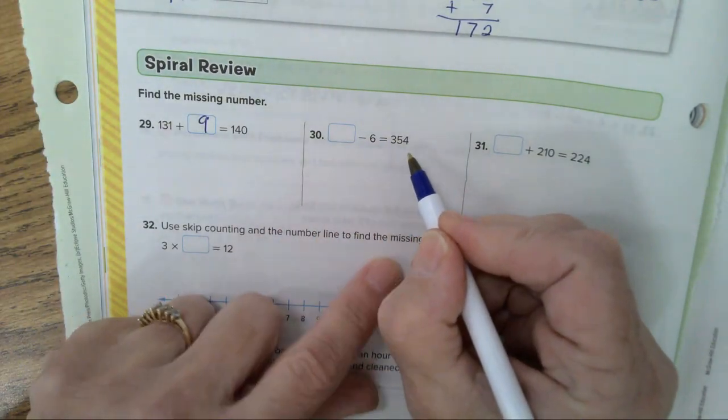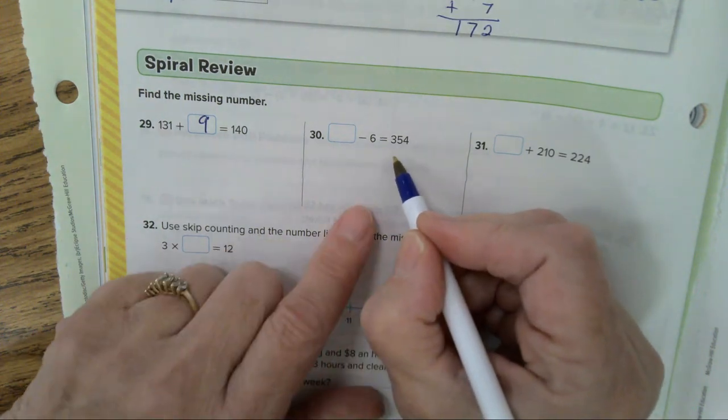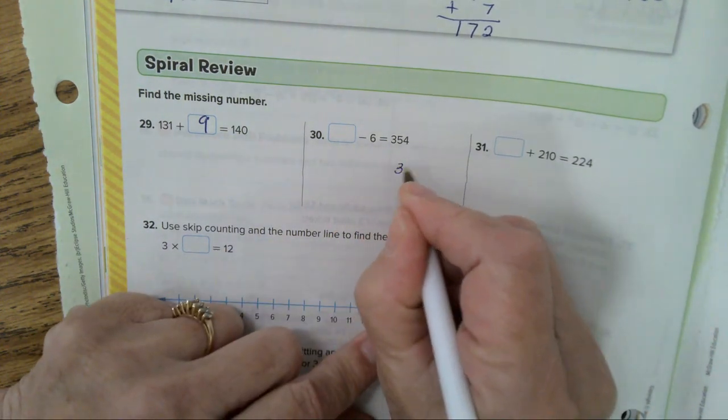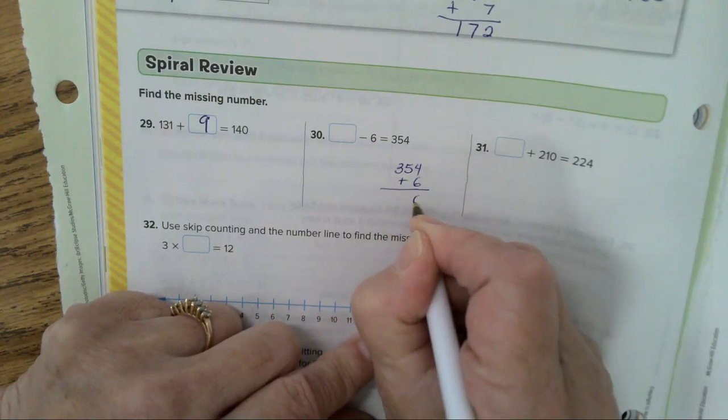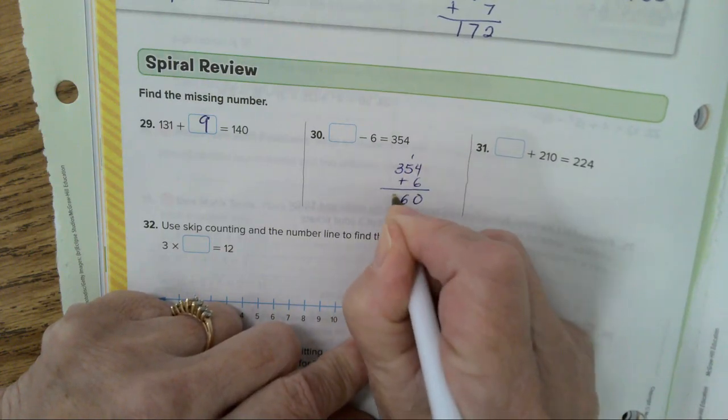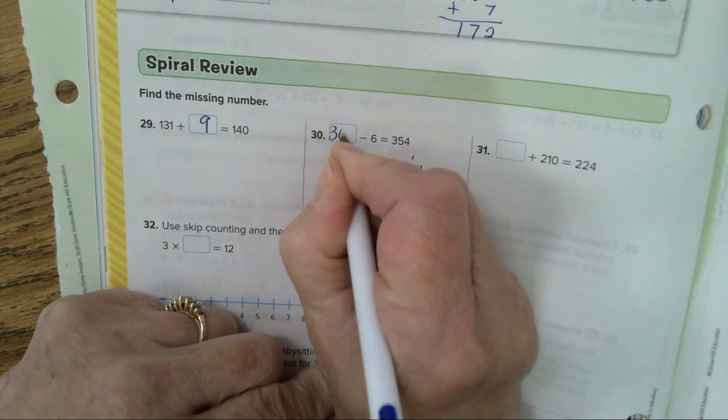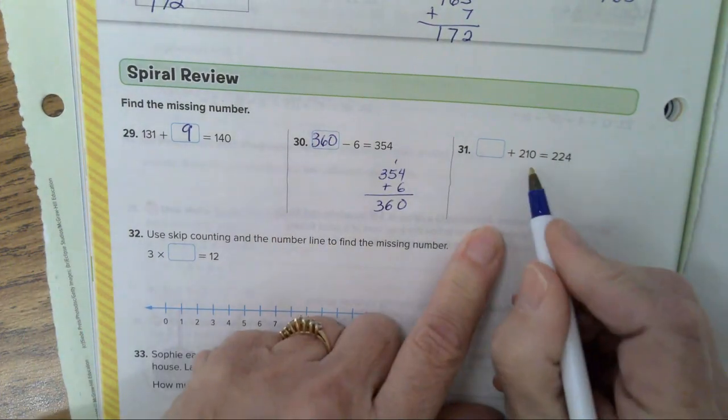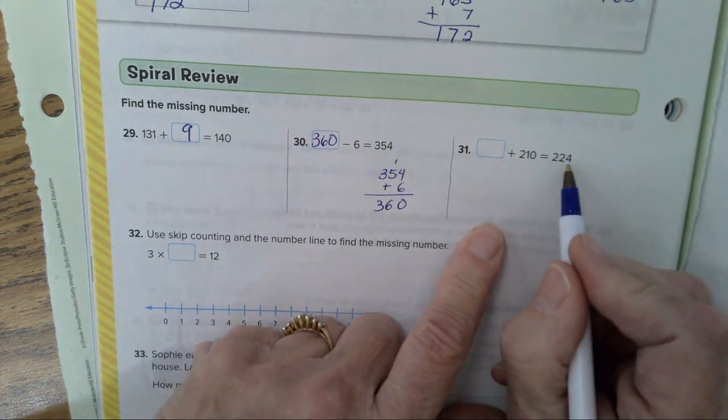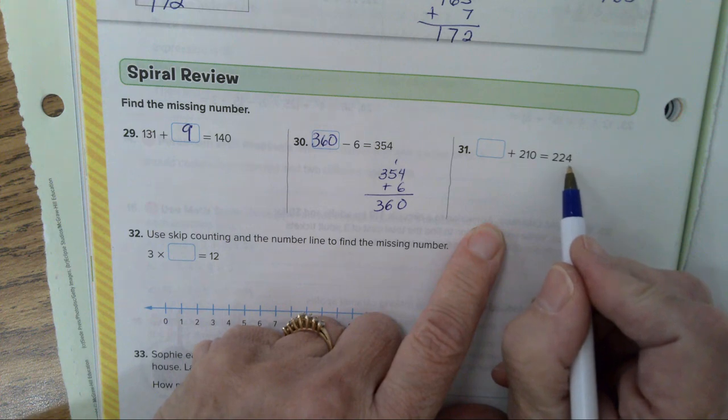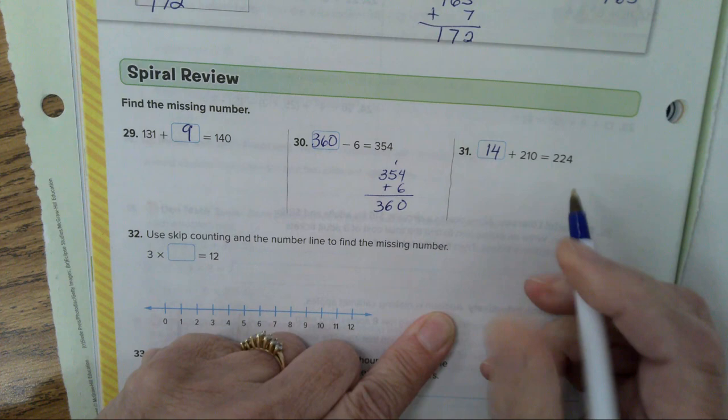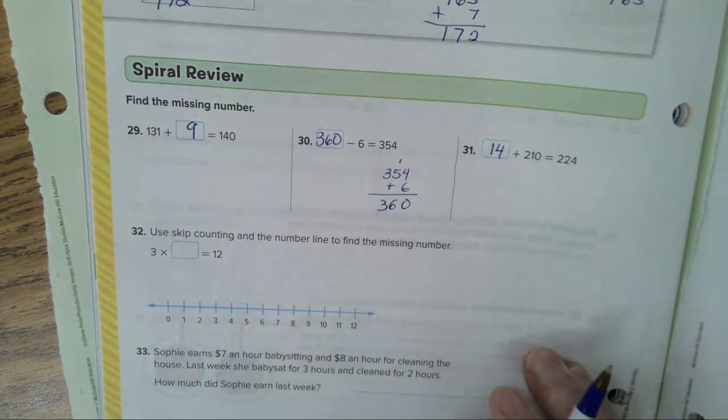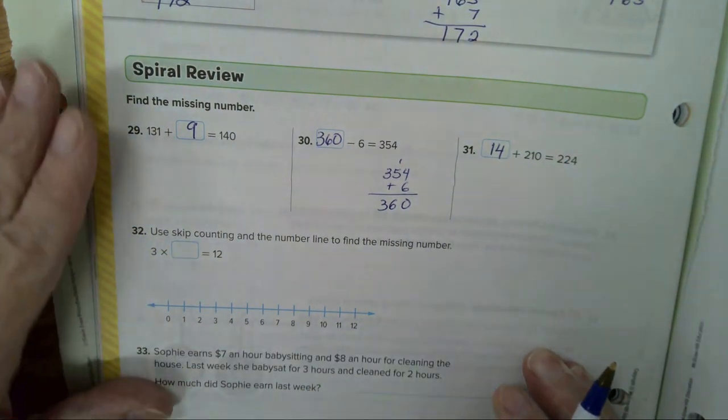Here, this one's a little harder. What minus 6 is 354? Well, if you take 354 and add 6, you're going to get the answer of 360. Here, what plus 210 is 224? Well, 14. You could probably do that one in your head. If not, 224 minus 210 will give you the answer 14.